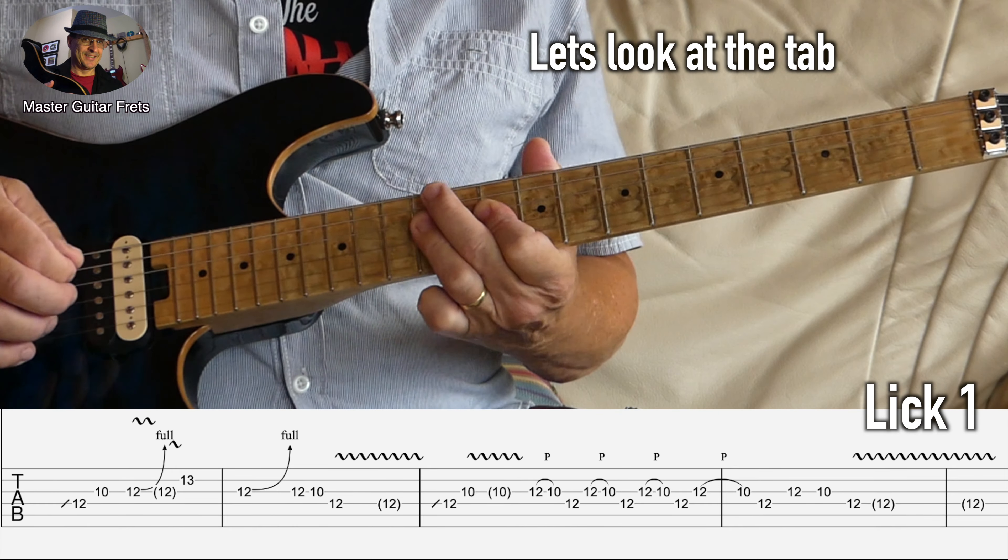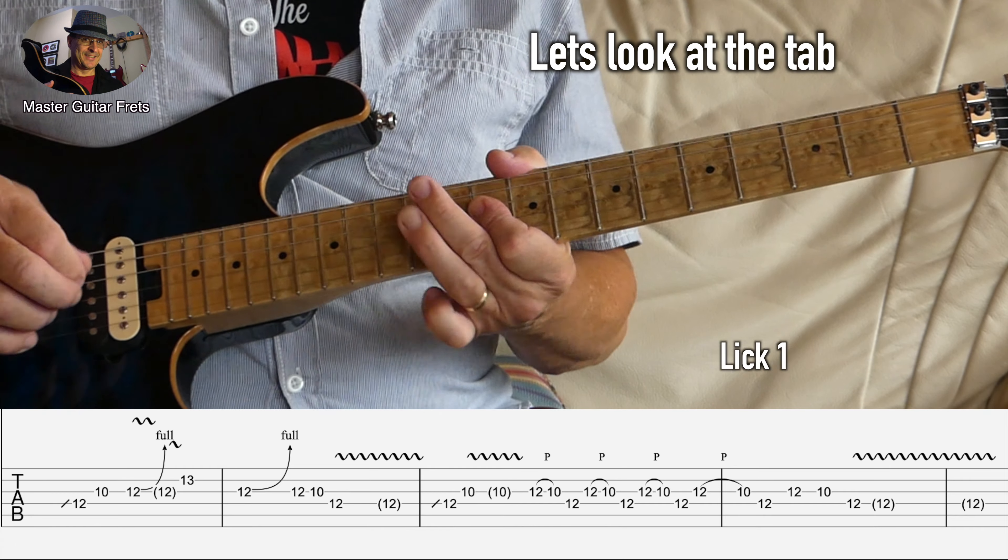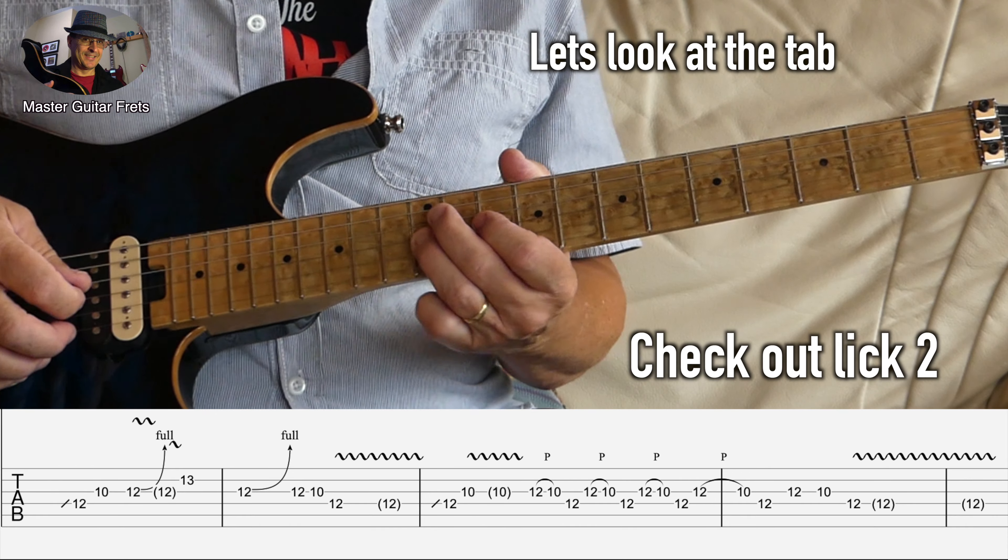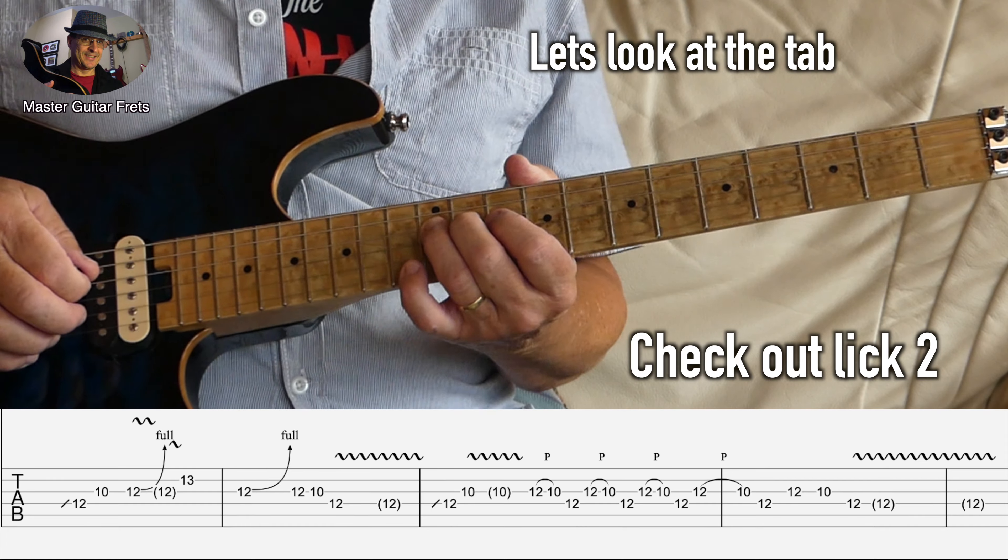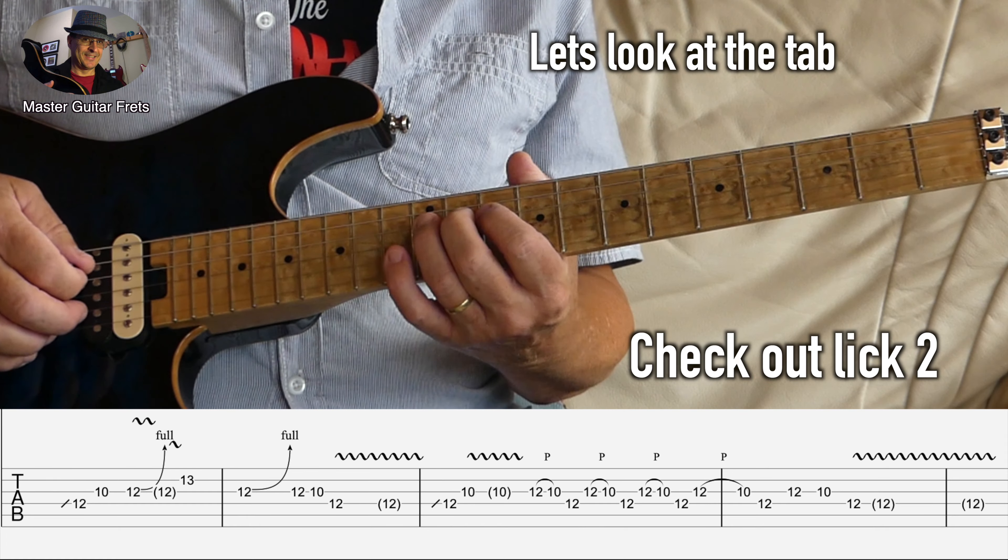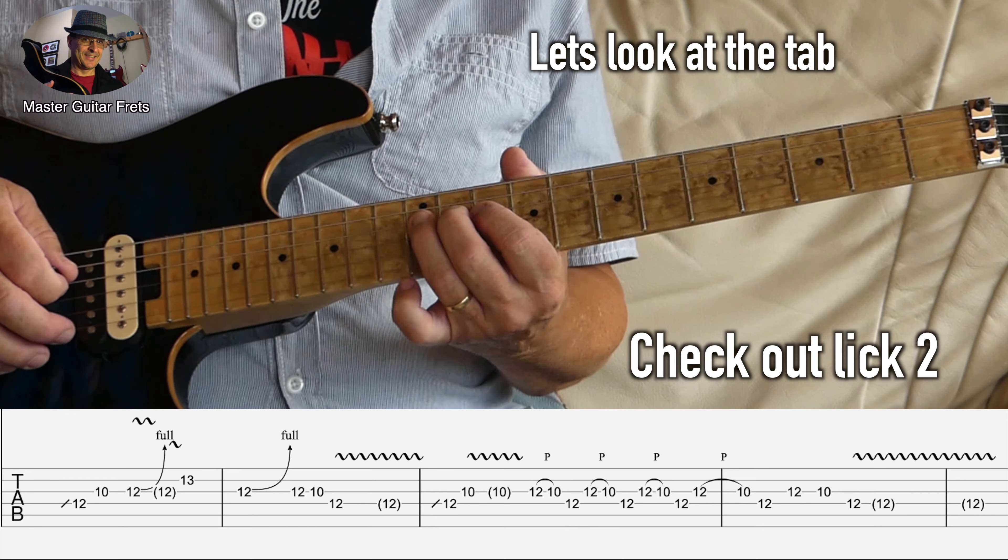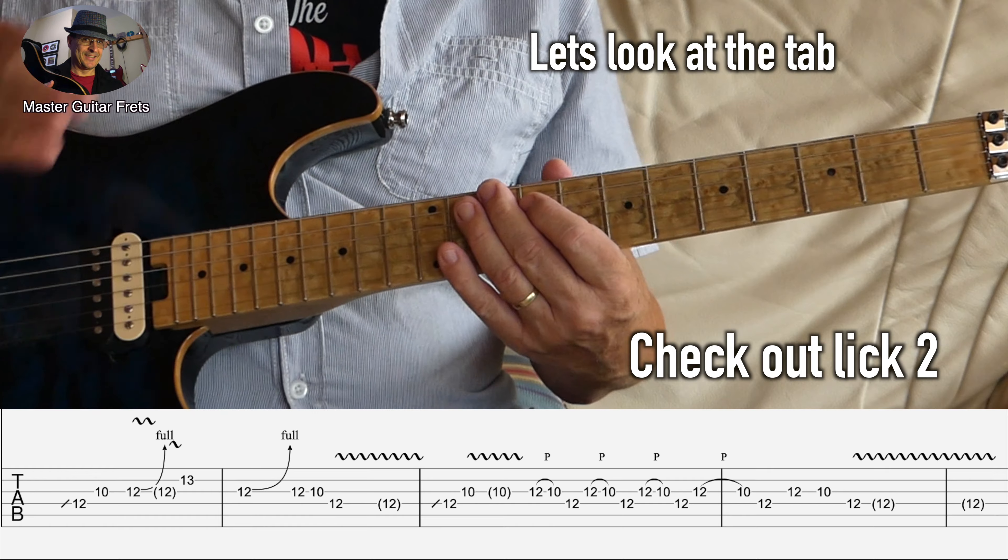We do this three times, and then we finish it by going from G12, G10, and back to D12. Here you can do the whammy or you can do a little bit of vibrato. So that is lick one.